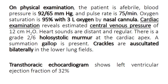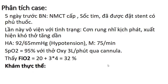Khám tim: đo được áp lực tĩnh mạch trung tâm khoảng 12 cm nước. Nghe tim thấy S1 S2 cách xa ra, nghe được tiếng thổi toàn bộ thì tâm thu độ 2/6 ở mỏm tim, xuất hiện tiếng gallop S3. Nghe phổi có crackles ở hai bên đáy phổi. Siêu âm tim cho thấy EF của tâm thất trái là 32%.